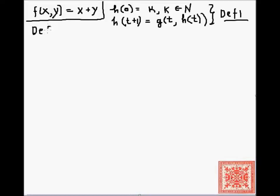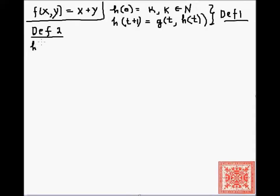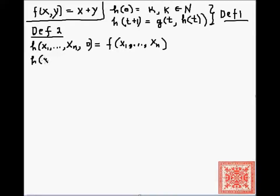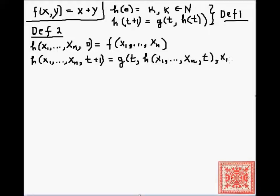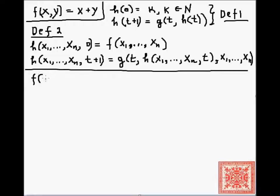Definition two is similar to definition one but allows passing extra arguments in recursive calls. The base case is h(x1, ..., xn, 0) = f(x1, ..., xn), where f is a total function. The recursive case is h(x1, ..., xn, t+1) = g(t, h(x1, ..., xn, t), x1, ..., xn), where g is a total function of n+2 arguments.